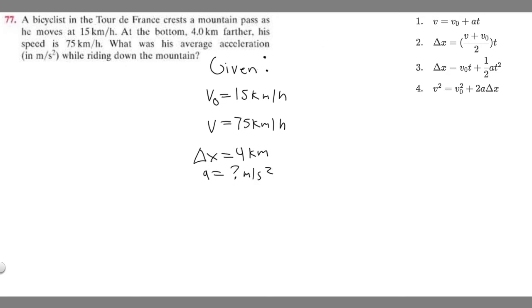If we look at our equations for which one to use, we see that we have a delta x, so it's not going to be the first one. And notice how we're not given any time, so it's not going to be 1, 2, or 3 because they all contain time variables. So we're going to be using the fourth one.